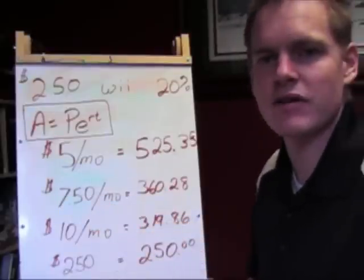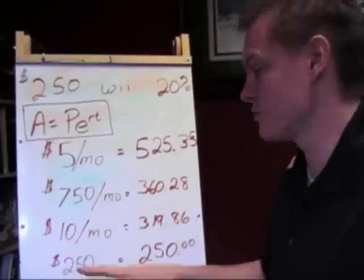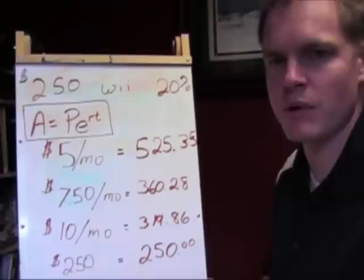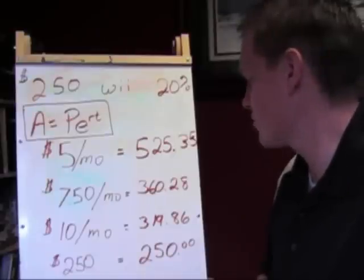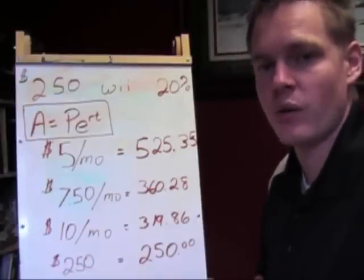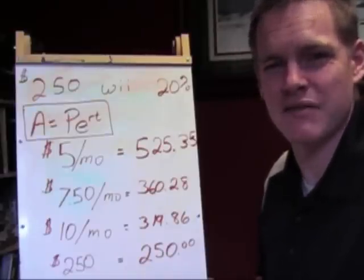If I decided to make a $7.50 payment, $7.50, that was my payment every month, I would end up paying $360.28 over about four and a half years.